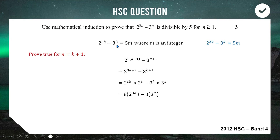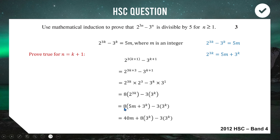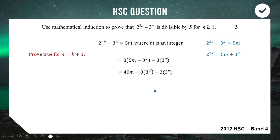From the assumption, 2^(3k) = 5m + 3^k. We substitute this into our expression inside the factor of 8: 8(5m + 3^k) − 3 · 3^k. Expanding gives 40m + 8 · 3^k − 3 · 3^k = 40m + 5 · 3^k. Writing 40m as 5 · 8m, we factor out five: 5(8m + 3^k). The expression equals five times something, so it's divisible by five.